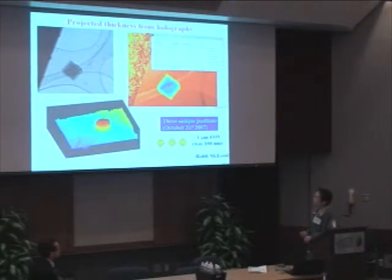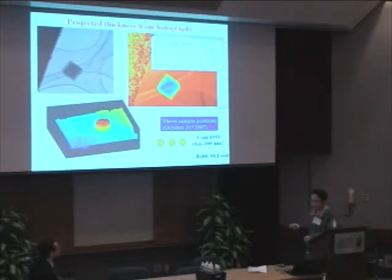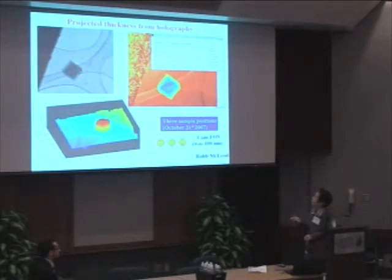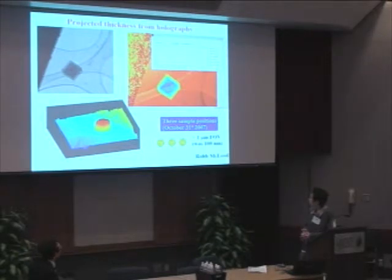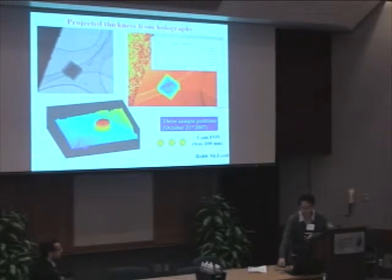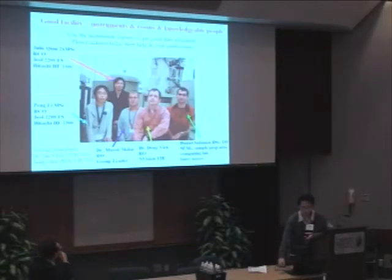Both machines have a holographic technique. You can get not only the amplitude information but also the phase of the electrons passing through the sample. Here are some examples — I'm not an expert on holography, but we have people who can do this.